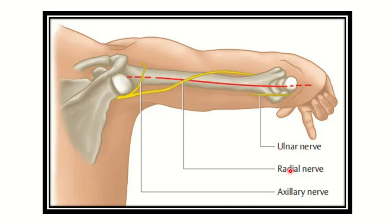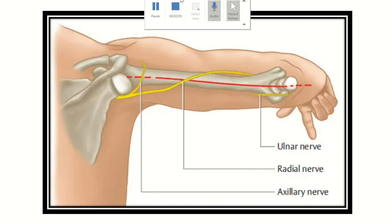In the mid-shaft of the humerus, there is the radial nerve. So a mid-shaft of the humerus fracture will cause damage to the radial nerve. Then in the medial epicondylar area — the medial epicondyle of the humerus — when it is fractured, it will cause damage to the ulnar nerve.